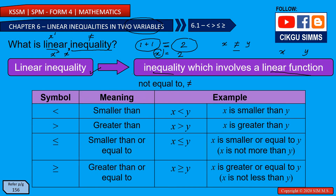We have some basic symbols. The first one is 'smaller than.' The symbol looks like this. We use it to say one thing is less than another. For example, x is less than y.